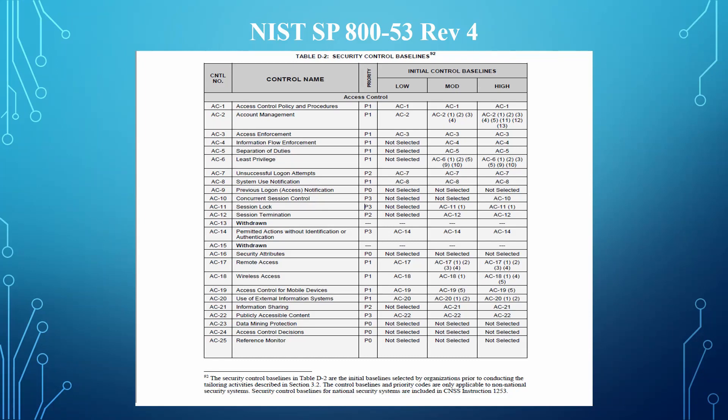In my previous video on the select step of the NIST Risk Management Framework, I talked about using NIST 853 Rev4 to select the applicable security control to map to the categorization impact level for the system. After all these controls are selected, based on our system — the BMS system, which was categorized as a moderate impact system — the next step is the implementation of the security controls.